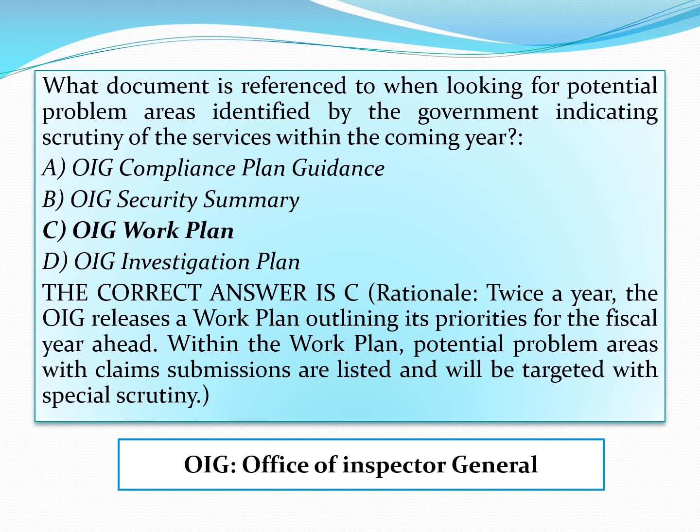What document is referred to when looking for potential problem areas identified by government, indicating the scrutiny of services within the coming year? The options are: OIG compliance plan guidance, OIG security summary, OIG work plan, and OIG investigation plan. OIG refers to Office of Inspector General.